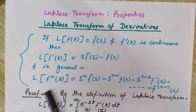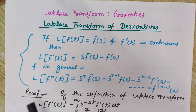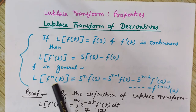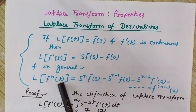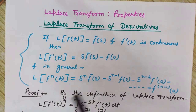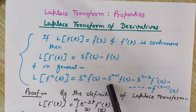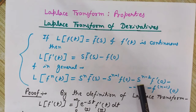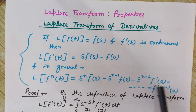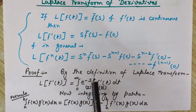In general, the Laplace transform of the nth derivative of f(t) would be s^n · f̄(s) minus s^(n-1) · f(0) minus s^(n-2) · f'(0) and so on. Now let's see the proof by the definition of Laplace transform.